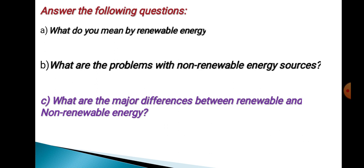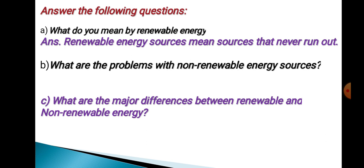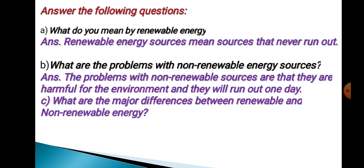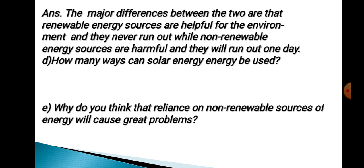Now I will give you some questions and show you how to answer them. Question A: What do you mean by renewable energy? Answer: Renewable energy sources means sources that never run out. Question B: What are the problems with non-renewable energy sources? Answer: The problems with non-renewable sources are that they are harmful for the environment and they will run out one day. Question C: What are the major differences between renewable and non-renewable energy? Answer: The major differences are that renewable energy sources are helpful for the environment and never run out, while non-renewable energy sources are harmful and will run out one day.